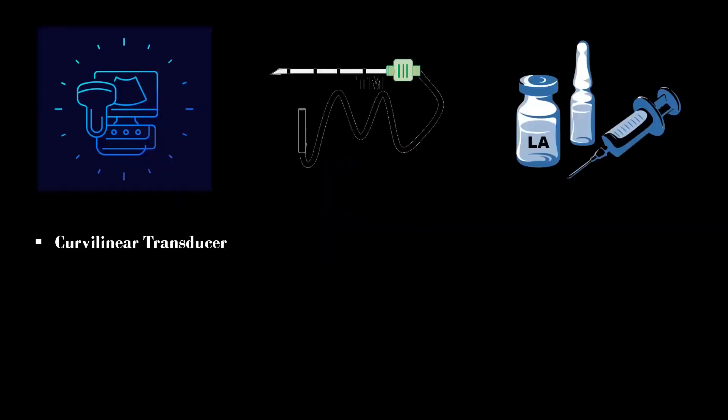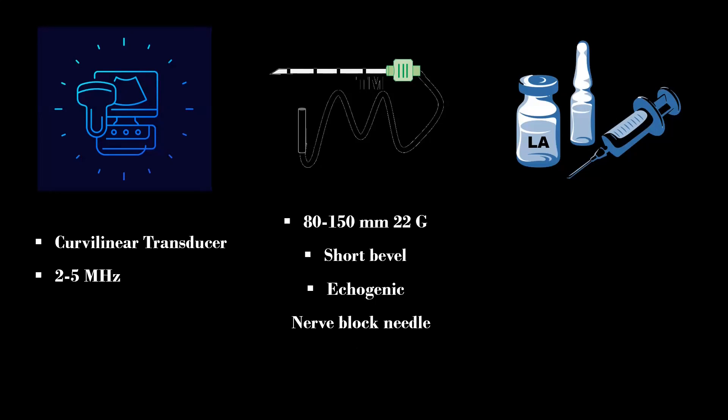A low-frequency curvilinear transducer is used to perform this block. An 80-150 mm short beveled echogenic nerve block needle is preferred. A 22-23 gauge Quincke needle can be used as an alternative.